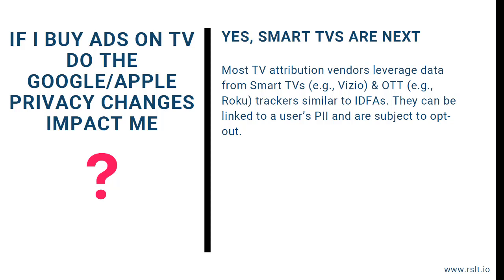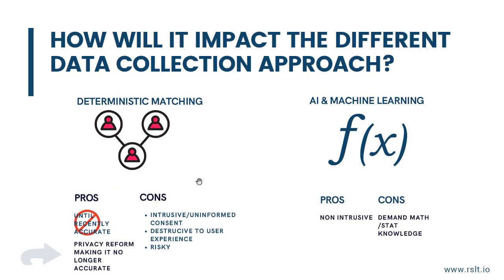A common question we are asked is: if I buy ads on TV, do the Google and Apple privacy changes impact me? Yes — smart TV and OTT, such as Hulu and Roku, might endure the next wave of compliance, because OTT and connected TV leverage online trackers. The most drastic impact will be on deterministic matching. As the number of opt-outs increases drastically, privacy reform will make it no longer accurate.